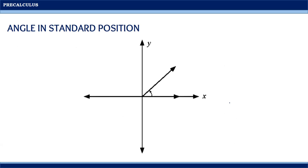It is important to note that one revolution is equivalent to 360 degrees. Hence, from the figure of an angle in standard form, notice that one revolution was divided into four quadrants. Moreover, if the terminal side is not yet moving, then the angle is equivalent to zero degrees.